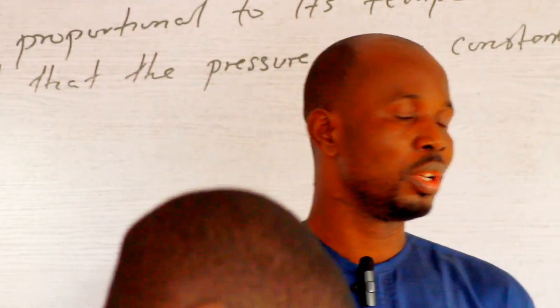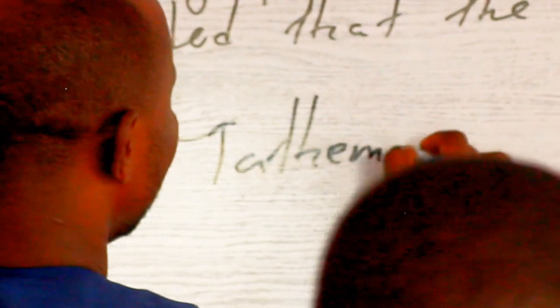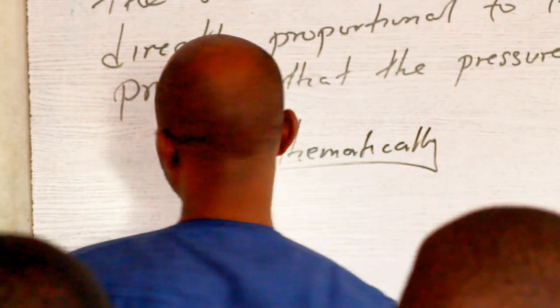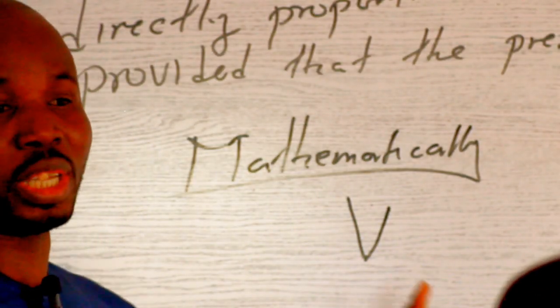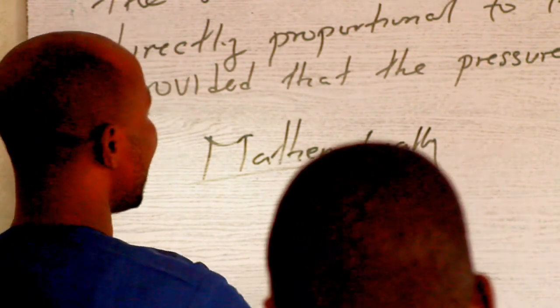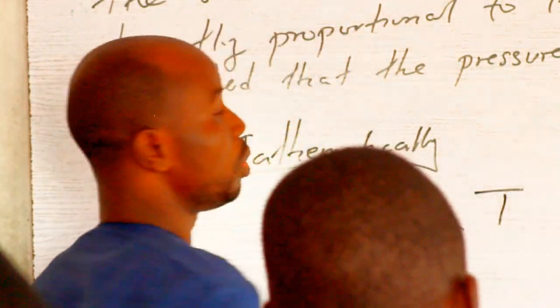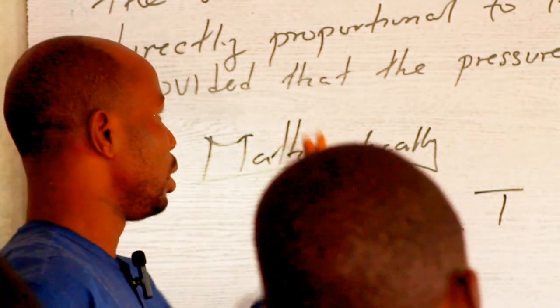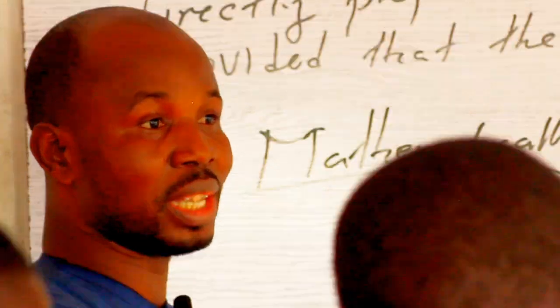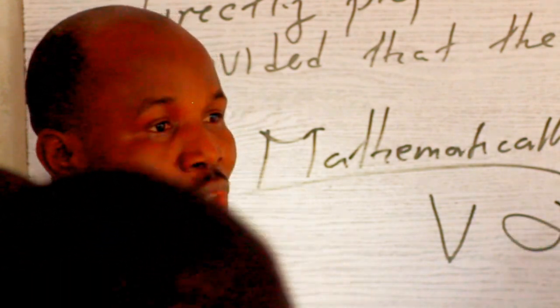And like I used to tell you, from the law, the law states that the volume—we can put this thing mathematically. Charles was telling us that the volume of a given mass of gas, which we are going to represent with V, is directly proportional to its temperature. We are representing our temperature with T. So we have, this is the mathematical expression of what Charles is telling us.